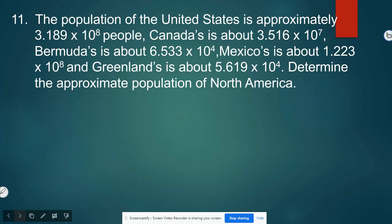Number 11. The population of the United States is approximately 3.189 times 10 to the 8th people. Canada's is about 3.516 times 10 to the 7th. Bermuda's is about 6.533 times 10 to the 4th. Mexico's is about 1.223 times 10 to the 8th. And Greenland's is about 5.619 times 10 to the 4th. Determine the approximate population of North America.